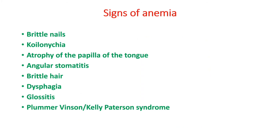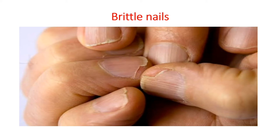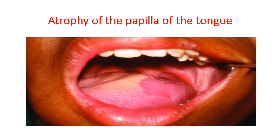The signs of anemia include brittle nails, koilonychia, atrophy of the papilla of the tongue, angular stomatitis, brittle hair, dysphagia, glossitis, and Plummer-Vinson or Kelly-Patterson syndrome. Nails become very thin and soft, which become easily breakable — called brittle nails. Atrophy happens in the papilla of the tongue where you can see deep red mucosal layers as raw wounds, which may be very painful.